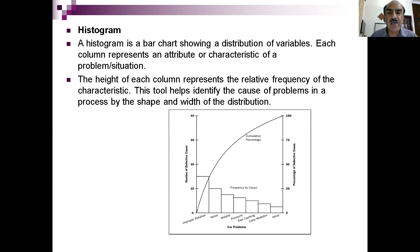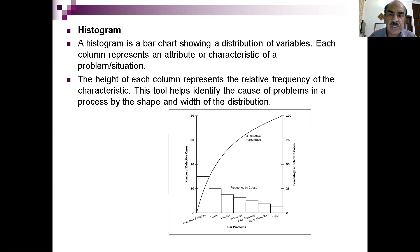Histograms are bar charts showing the distribution of various variables. Each column represents an attribute or characteristic of a problem situation, and the height of each column represents relative frequency. For example, categories might include improper rotation, noise, wobble, pressure, axle cocking, case wobbles, and others. Based on this, you can see that the highest frequency comes from improper rotation in the system. Based on that, we can decide what is the biggest source of problem and fix it.